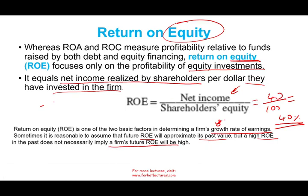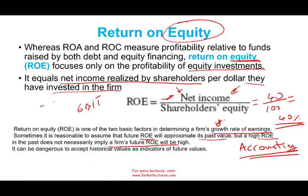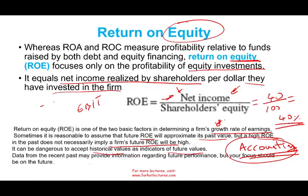All the numbers we look at — net income and EBIT — are accounting figures, which is important to always remember. That means the company can easily manipulate earnings using different techniques, which we'll talk about later in this chapter. Different accounting treatments influence net income and EBIT. So always keep in mind those numbers are accounting numbers — it could be dangerous to accept historical value as an indicator of future value. Data from the recent past may provide information regarding future performance, but you should evaluate future performance, not just past performance.